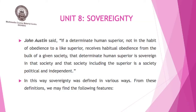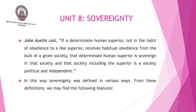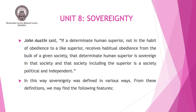Regarding sovereignty, Austin's theory is another important opinion. He said that if a determinate human superior, not in the habit of obedience to a like superior, receives habitual obedience from the bulk of a given society, that determinate human superior is sovereign in that society, and that society including the superior is a society political and independent.